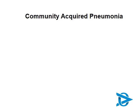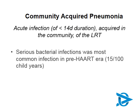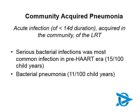Community-acquired pneumonia is defined as an acute infection of less than 14 days duration, acquired in the community, of the lower respiratory tract. Often this diagnosis is not made through microbial confirmation but is a clinical diagnosis. In the context of HIV, before ART, serious bacterial infections were one of the most common reasons for admission and death in children with HIV, with bacterial pneumonia being by far the most common and most deadly.